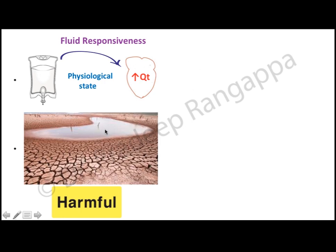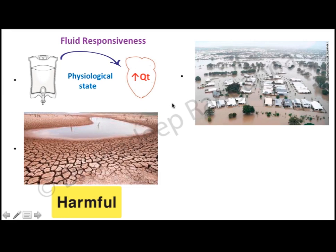Giving less fluid to a patient who needs fluid to improve their cardiac output would be harmful. If someone is fluid deficient and you are dealing with an unstable patient, not giving fluids would be harmful. But giving too much fluid is also harmful. The main crux of fluid responsiveness is to give the optimal amount of fluid a patient needs — not less, not more.